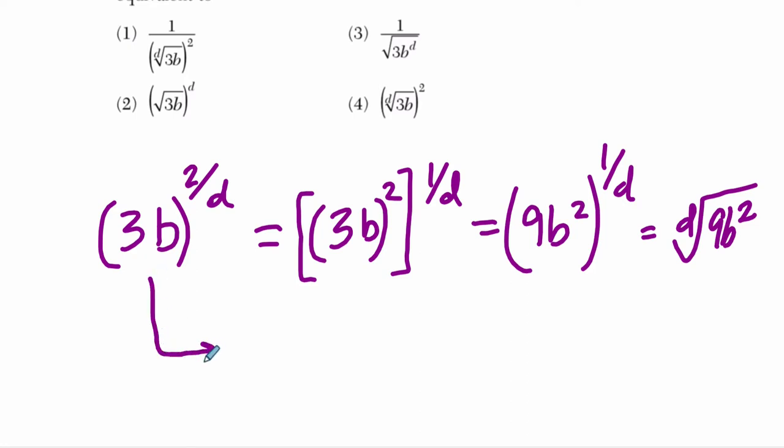An equivalent but different way to write it would be to think of it not as 3b squared first, but take the dth root first and then square it. Just reverse these two exponents here. Same thing. 2 times 1 over d and 1 over d times 2. Those are equivalent. That's what the commutative property tells us of multiplication.